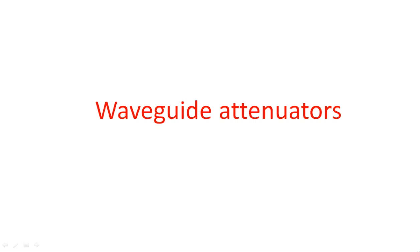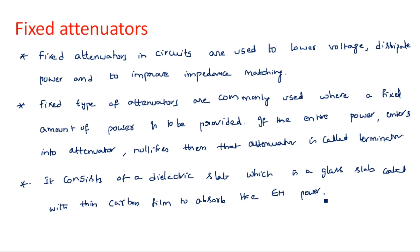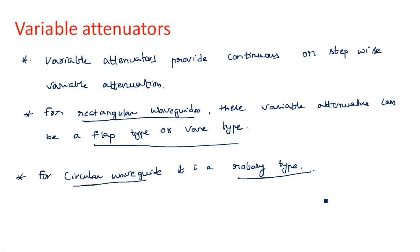Hi everyone, in this video I am continuing the previous variable attenuator concept. In the last video I started waveguide attenuators, discussed the different types and what a waveguide attenuator means. The types include fixed attenuator and variable attenuator. For variable attenuators, different waveguides have different types: rectangular waveguide may use flap type or vane type, and circular waveguide uses rotary type.